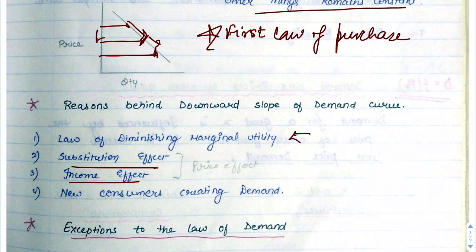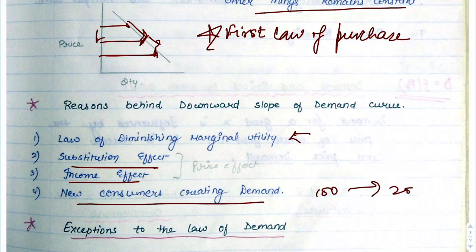Last is new consumers creating demand. Some products may have only 100 consumers, but if consumers increase to 200, obviously the demand increases. These are the reasons why the demand curve is downward sloping.